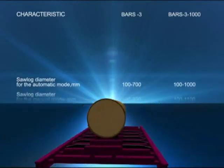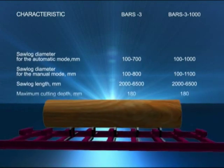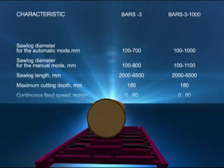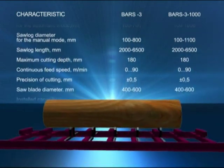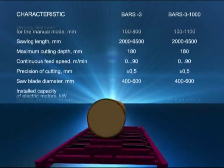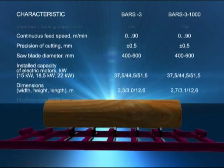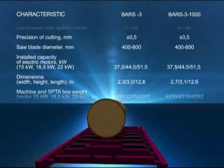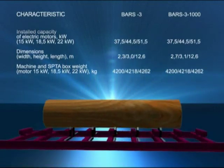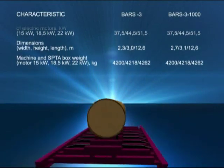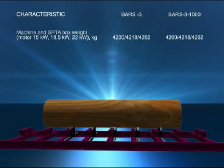The machine can cut logs 2 to 6.5 meters long, up to 800 millimeters in diameter in manual mode, and up to 700 millimeters in diameter in automatic mode. Bars 3-1000 is a modification of Bars 3 and can cut logs up to 1 meter in diameter in automatic mode.